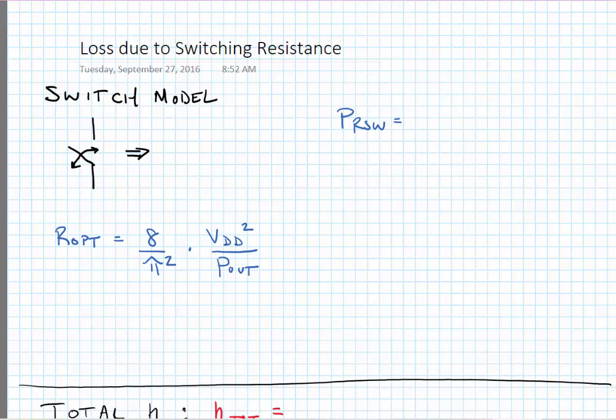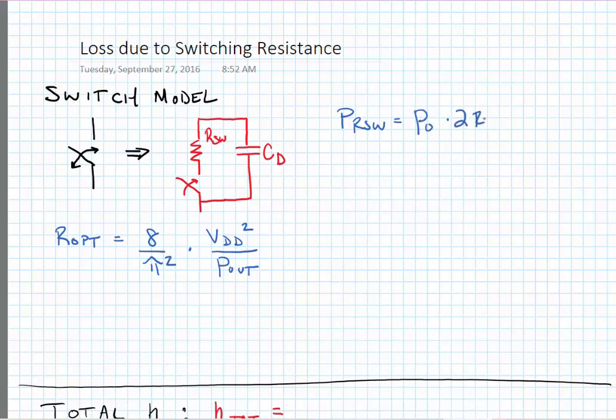Bringing up loss, we can also calculate the loss due to switching resistance in the class F power amplifier. A simple model for our switch includes some series resistance in series with an ideal switch along with some shunt capacitance to represent the capacitance from the switch. We can show that the power dissipated in the switch is equal to the output power times two times the switching resistance divided by the optimum termination resistance of the PA.